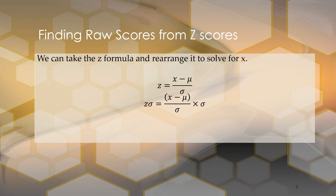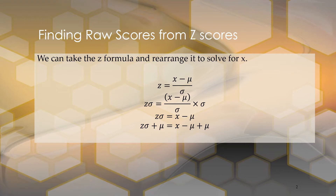We're going to multiply by the standard deviation, and on the right side it's going to cancel out. So we're going to have z times the standard deviation equals x minus the mean. Now we're going to add the mean to get rid of it on the right side so we can have x by itself.